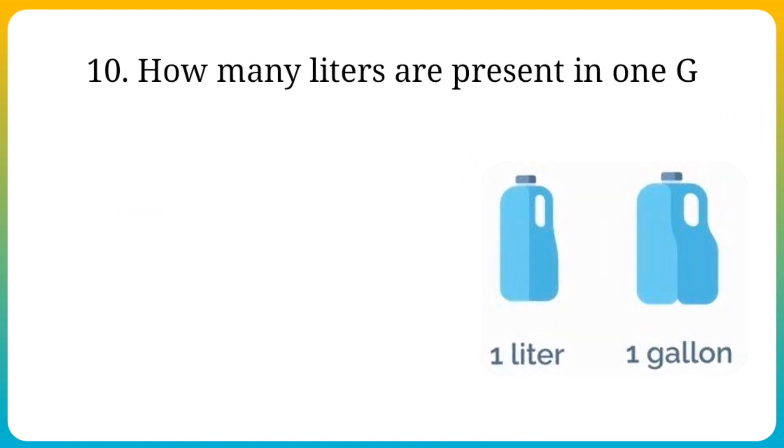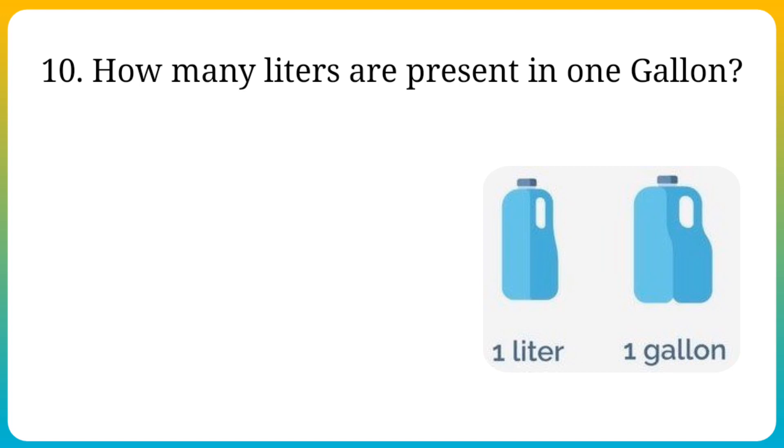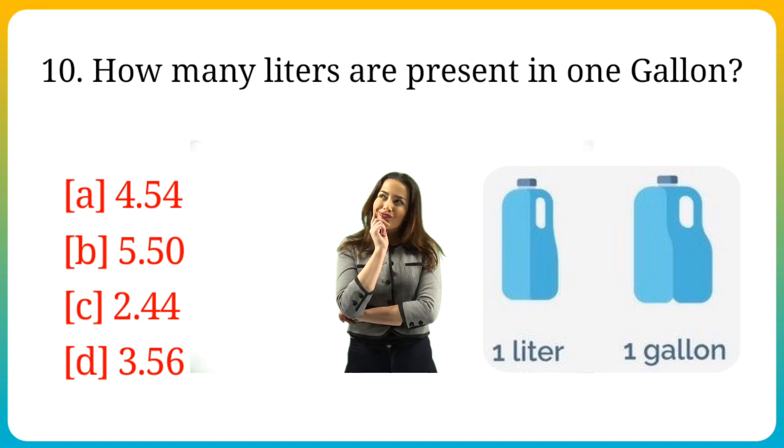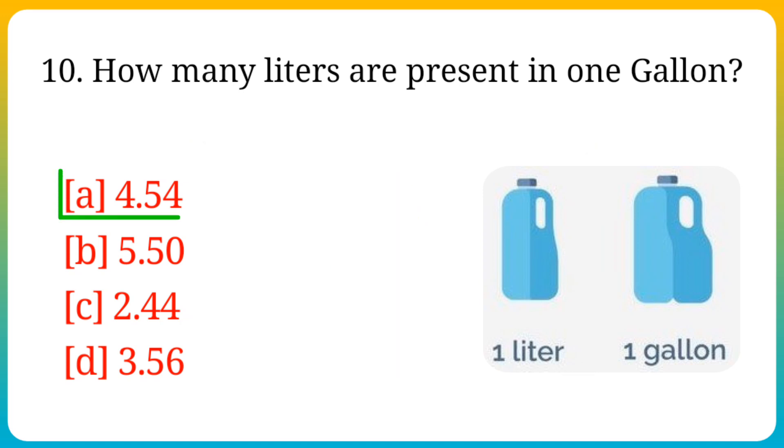Question number 10. How many liters are present in one gallon? Options are: A. 4.54, B. 5.50, C. 2.44, D. 3.56. Answer is option A. 4.54.